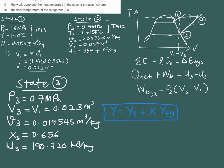Since state 3 is in the mixture region, we use the general quality relation to find internal energy. First, we solve for quality X using the specific volume relation, and we obtain X = 0.656. Then using the general mixture equation substituting all U values, we finally get U3 = 190.720 kJ/kg.